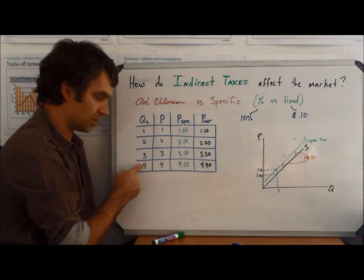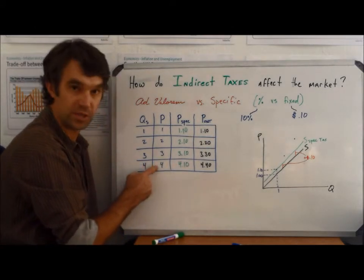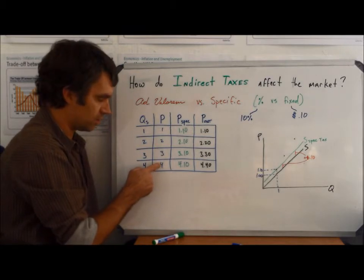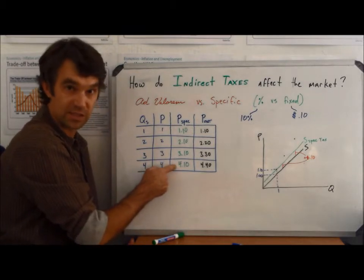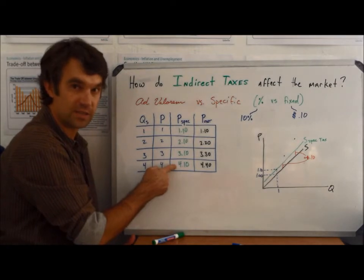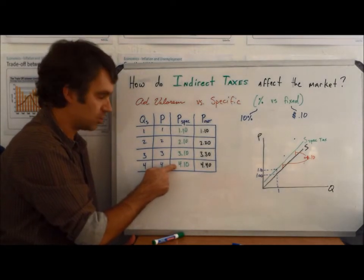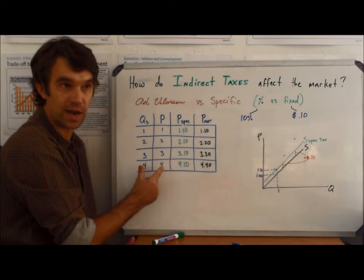Because for each of those, this would be total revenue of 4 times 4 is 16, so this would be 4 times 4.10, so 16.40. But that 40 extra cents is going to get sent to the government, so it goes back to the original 16 that I needed.